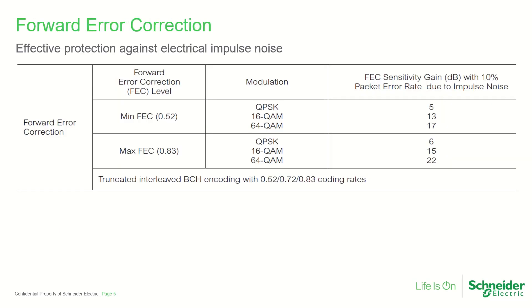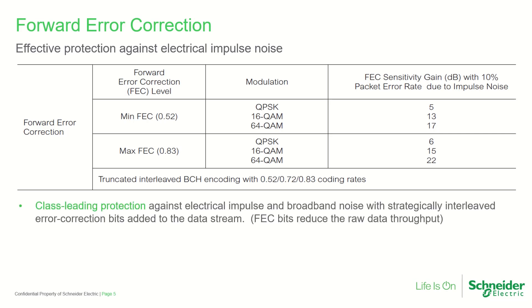Forward error correction in the TRIO-Q radio improves the decoding reliability of received data packets. This improves performance of the radio channel by minimizing lost messages and retries at the SCADA protocol level. It provides class-leading protection against electrical impulse and broadband noise, with strategically interleaved error correction bits added to the data stream. FEC is only available in the QAM mode of operation.